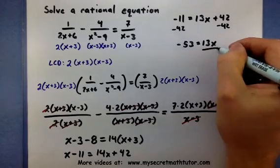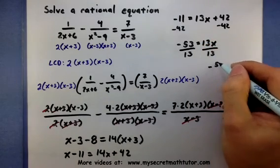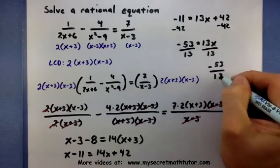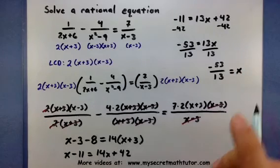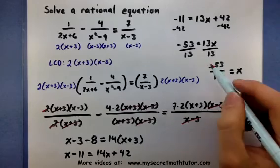Last step, divide by 13. And there we go. So our solution out of all this is that x is equal to a negative 53 all over 13.